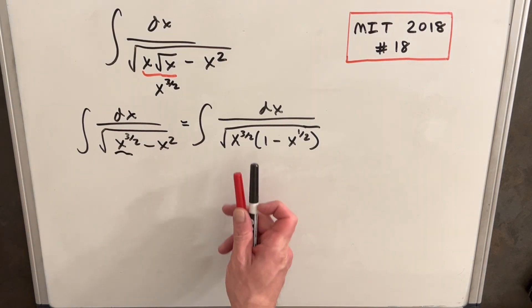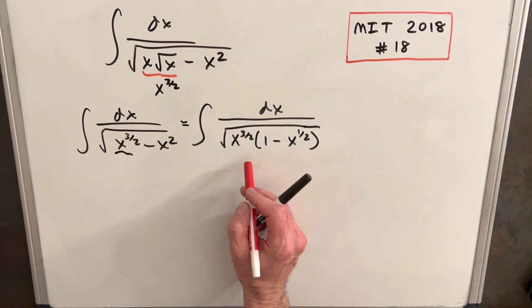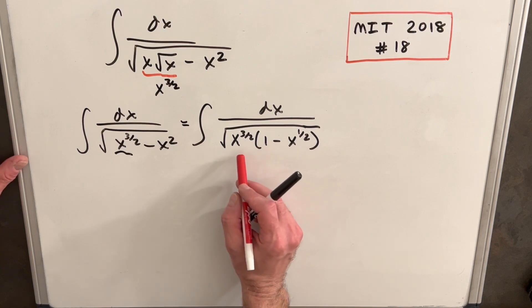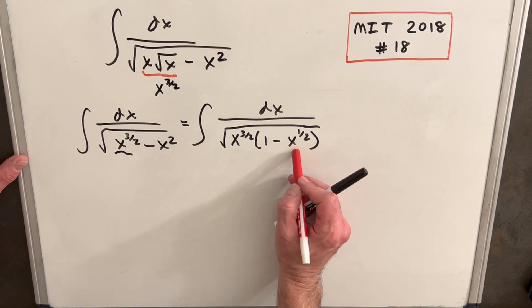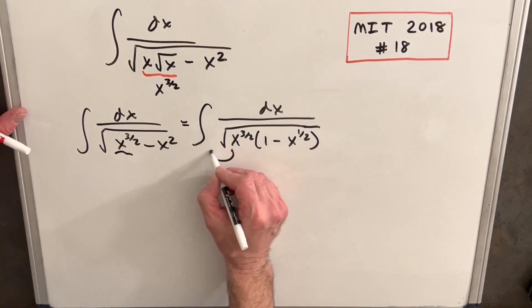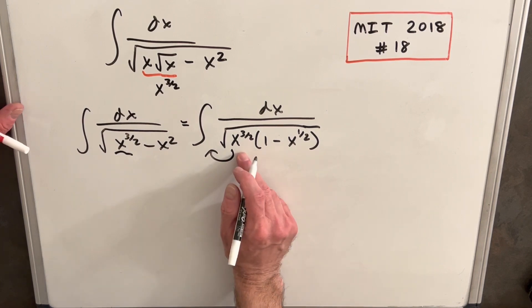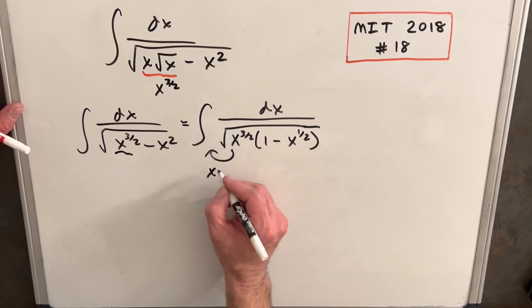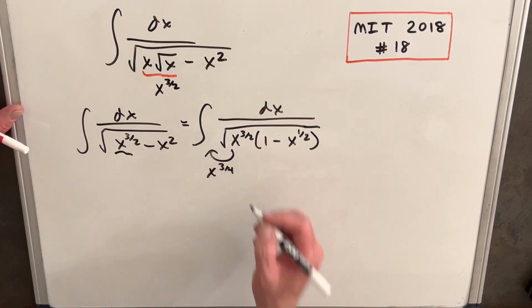Okay, so here you notice we factored out an x to the 3 halves just out of the parentheses. Just noticing that if you multiply x to the 3 halves times minus x to the 1 half, you get back a minus x squared. Then the next step is we're going to pull this out of the square root and it's going to be an x. This is going to be when we take the square root of x to the 3 halves, we get x to the 3 fourths.